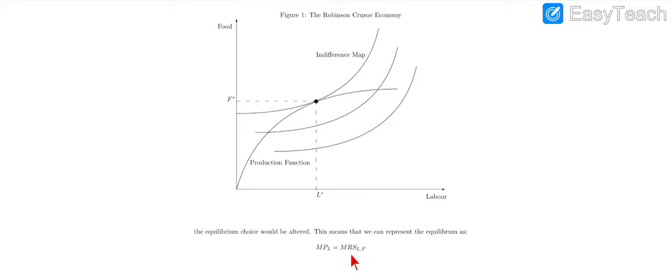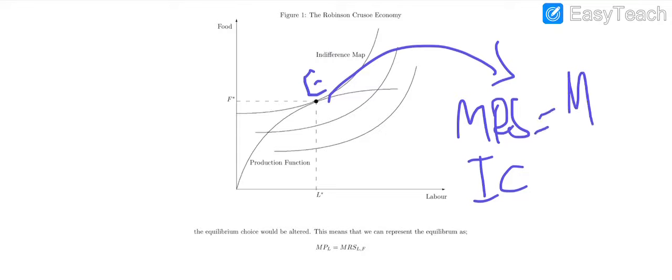MRS, marginal rate of substitution of L and F, is tangent to the highest indifference curve at this point. We can say that equilibrium lies where MRS (marginal rate of substitution derived from the IC) equals MPL (derived from the production function).